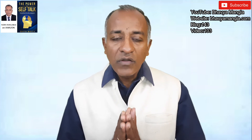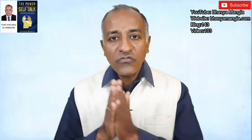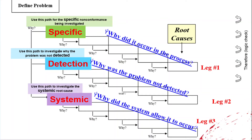When we talk about the three-legged 5-Why approach, there are different formats which an organization can use — this is just one way to do it. We define the problem, and then the first leg addresses occurrence — why the problem happened — and we do five whys with respect to that. Similarly, the second leg addresses detection, and the third leg addresses the systemic error — why this problem happened at a system level.